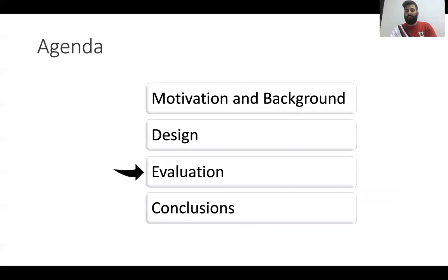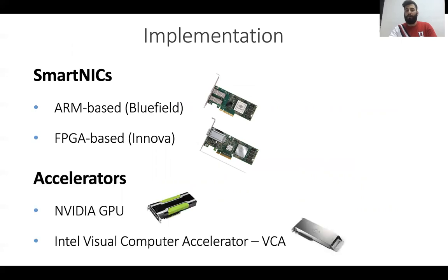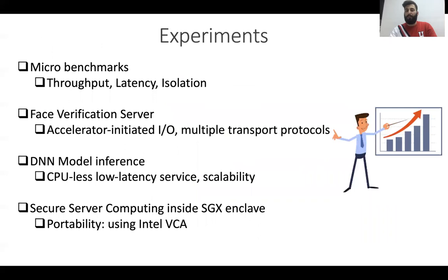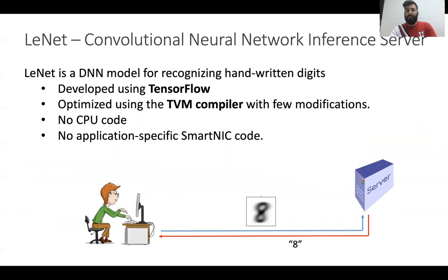Now I will move to the evaluation. We implemented Links on two different SmartNIC architectures: Bluefield, which is an ARM-based SmartNIC, and a partial implementation on Innova, which is an FPGA-based SmartNIC. We also used two different types of accelerators: the NVIDIA GPU and the Intel Visual Computer Accelerator. In this talk I will focus on two applications — one running on GPU, the other inside an SGX Enclave on the Intel VCA. I will start with LeNet, a deep neural network model used to recognize handwritten digits. LeNet was developed using TensorFlow and optimized using the TVM compiler, with no CPU code and no application-specific code running on the SmartNIC.